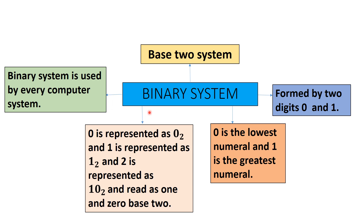Students, you have already learned about the base 5 number system in the previous classes. In today's lesson, we will start with the binary number system. The word 'bi' means two, so the binary system is also known as the base 2 system. The binary number system is formed by two digits, that is zero and one, in which zero is the lowest numeral and one is the greatest numeral.